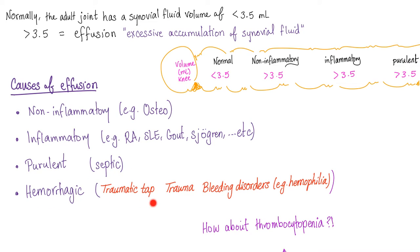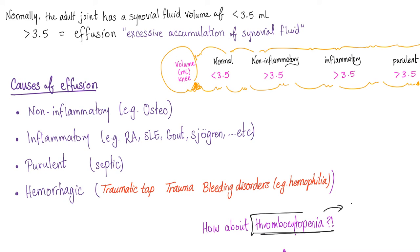And then there is hemorrhagic effusion, such as traumatic tap — when you injure the patient while inserting the needle. Also trauma, where the patient already had a trauma like the day before and today they have blood in the joint. Bleeding disorders such as hemophilia. How about thrombocytopenia? No — because thrombocytopenia is a problem with platelets, a problem in primary hemostasis.